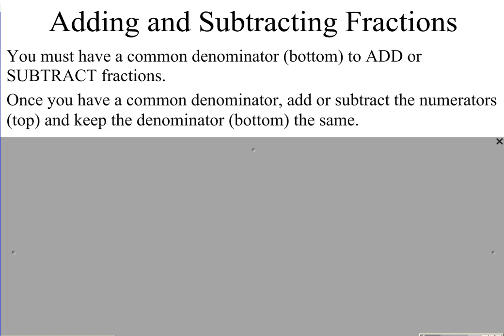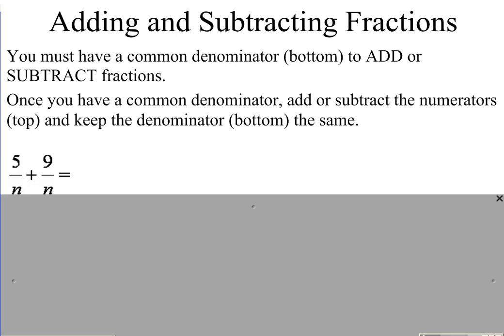Once you have a common denominator, you simply add or subtract the numerators, which is the top part, and keep the denominators, which is the bottom part, the same. So looking at this first example, 5 over n plus 9 over n. We already have a common denominator of n. The denominator always stays the same once you add or subtract. You simply add or subtract the numerators. 5 plus 9 is 14, so we have 14 over n.